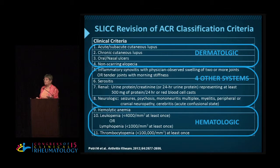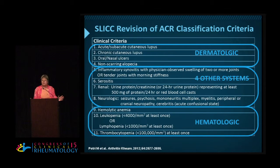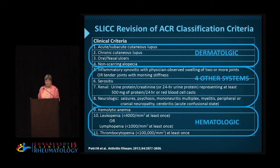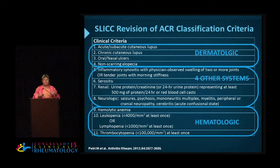The next four criteria cover the other organ systems: joints, serositis, renal for those who didn't have a renal biopsy, and neurologic. I hope you're impressed that neurologic includes many other manifestations than those in the old ACR.